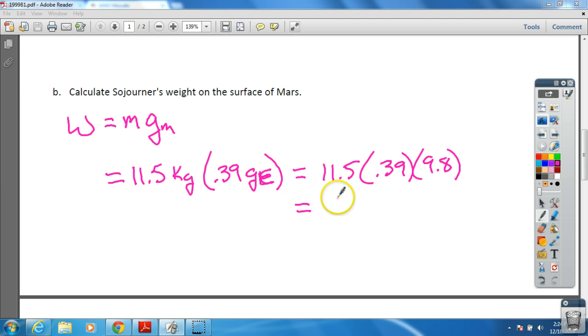So this would be 11.5 times 0.39 times the gravity on Earth, which is 9.8. If you multiply all those together, you will get 44 newtons. And so that is the weight of Sojourner on Mars, if we were to weigh it actually on Mars itself.